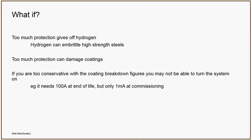If we protect the pipe too hard we can generate hydrogen gas. Hydrogen gas can soak into high-strength steels if they're under a lot of tension, causing them to crack and fail catastrophically — so we don't want to turn the system up too high. If we turn it up too high we also generate a lot of alkalinity, which can break down your coating system, resulting in more and more demand on the CP system.